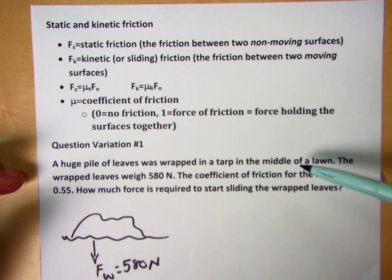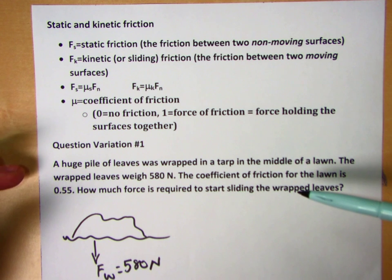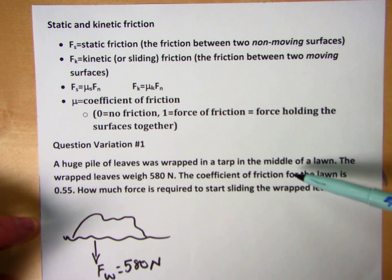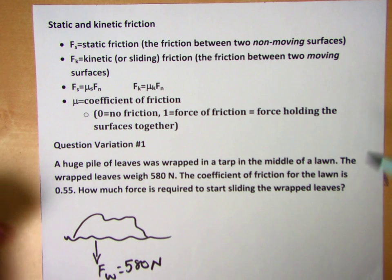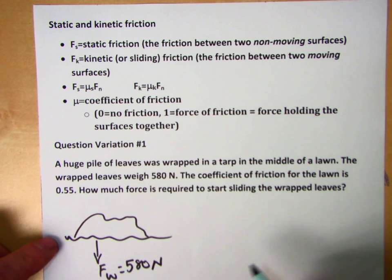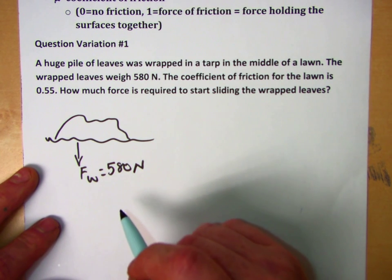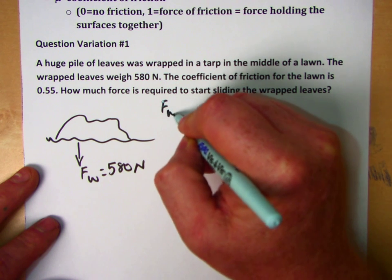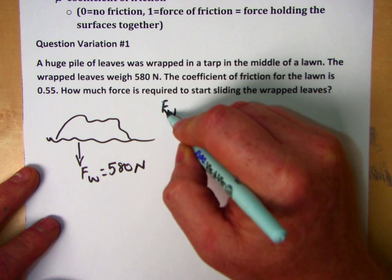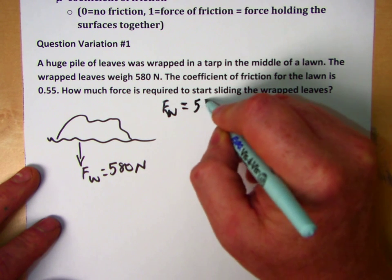A huge pile of leaves is wrapped in a tarp in the middle of the lawn. The wrapped leaves weigh 580 newtons. The coefficient of friction for the lawn is 0.55. How much force is required to start sliding the wrapped leaves? Let's write our givens. I've got a weight force—I could have written Fg for gravity—but it's 580 newtons.